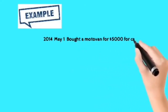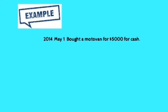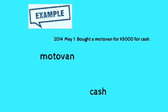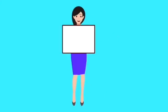For example: May 1, 2014 — bought a motor van for five thousand dollars cash. The first thing we want to identify is the accounts that are affected, which are the motor van account and the cash account. Motor van is coming into the business, so we debit the motor van account, while cash is going out of the business, so we credit the cash account.